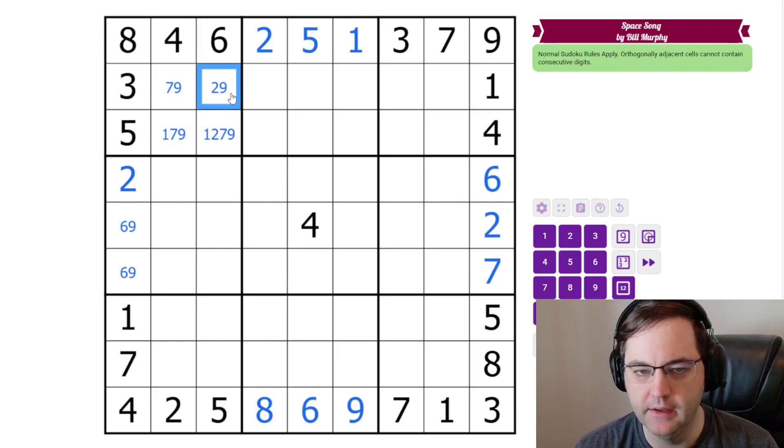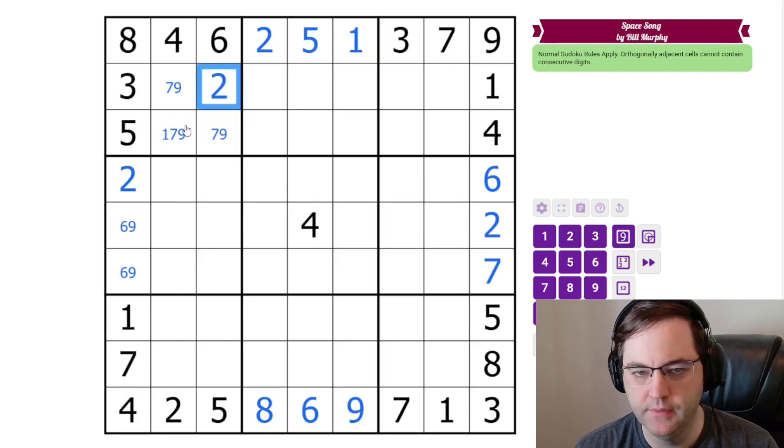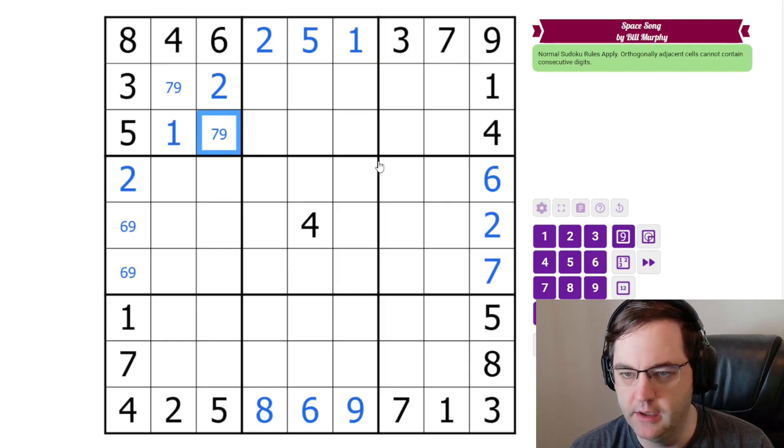Another way of looking at it is, these are the cells that 1 and 2 can go in. If this were 1 or 2, then we would have the same problem. We need a digit in the middle between these cells. So, this is not 1, 2. This is 2. This is 1. And we can't resolve the 7 and 9 yet. We will get to that later.